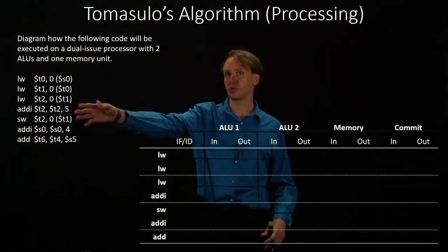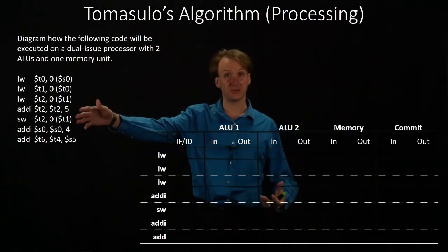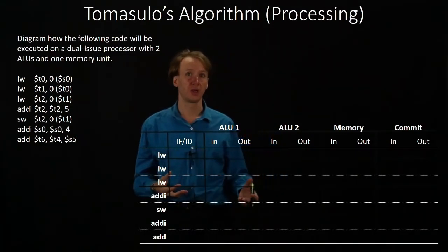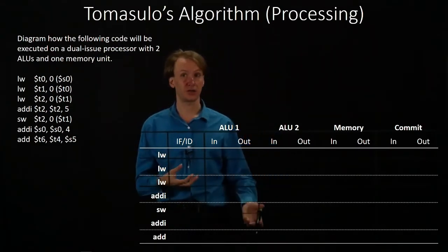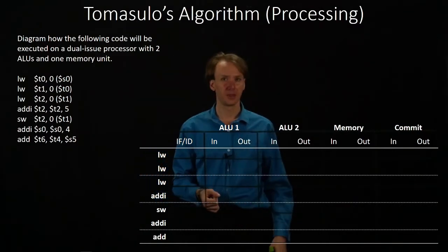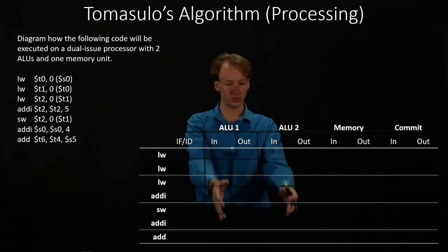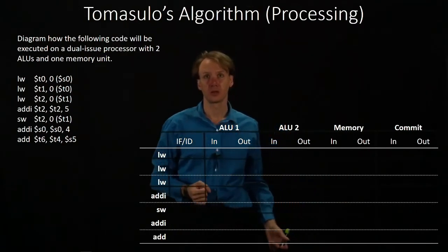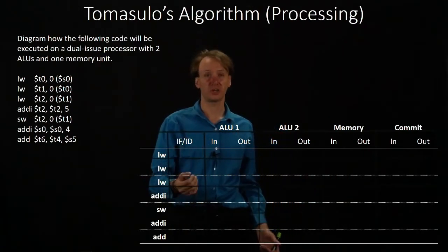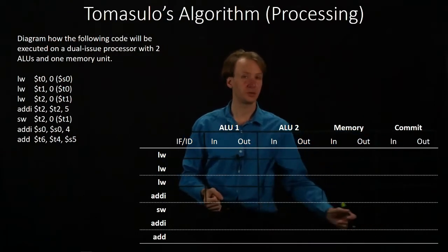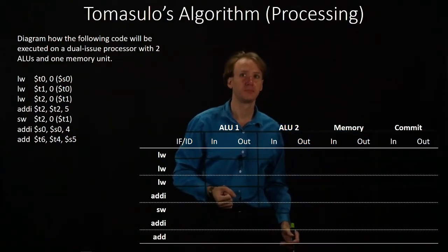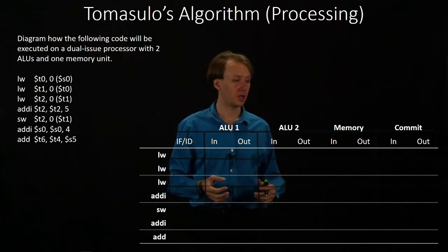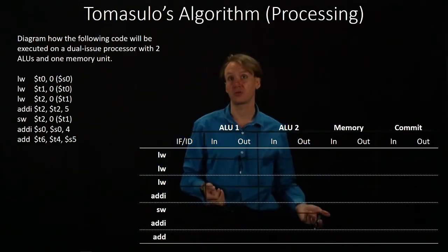For this example, we're going to be working with this set of code. We're going to see how it's going through our algorithm, where it's going, and at which cycles. In this case, we have a processor with two ALU units and a load/store unit. We've got our common instruction fetch hardware, as well as a commit unit. We're going to be able to issue two instructions every cycle, and we'll commit two instructions back every cycle.